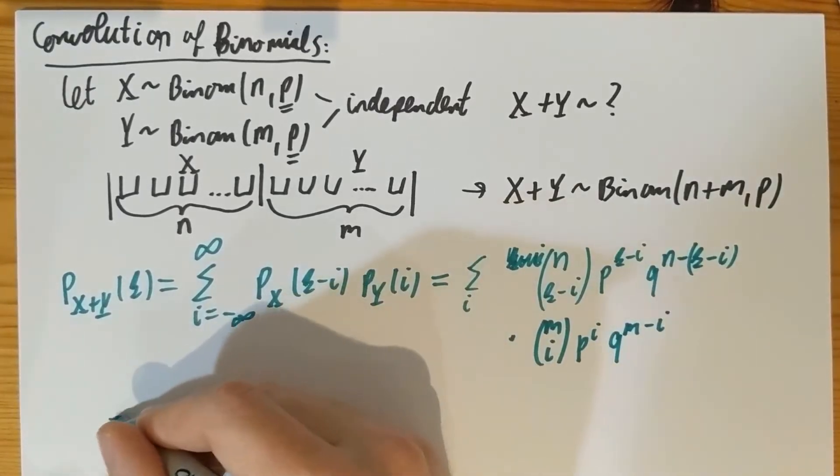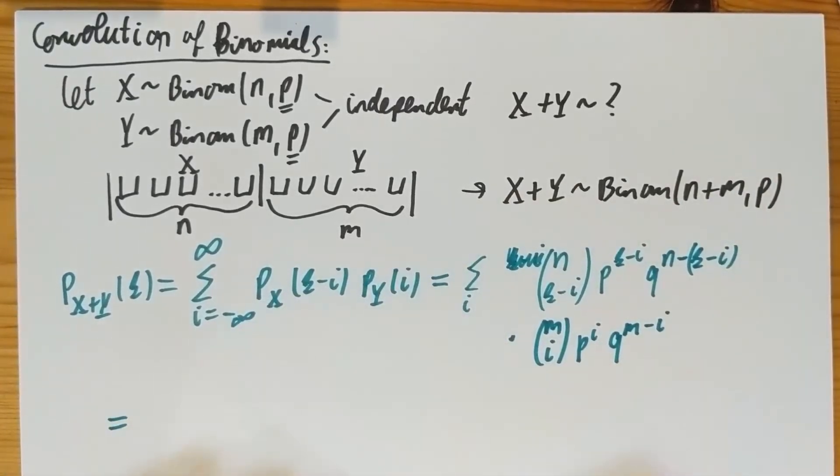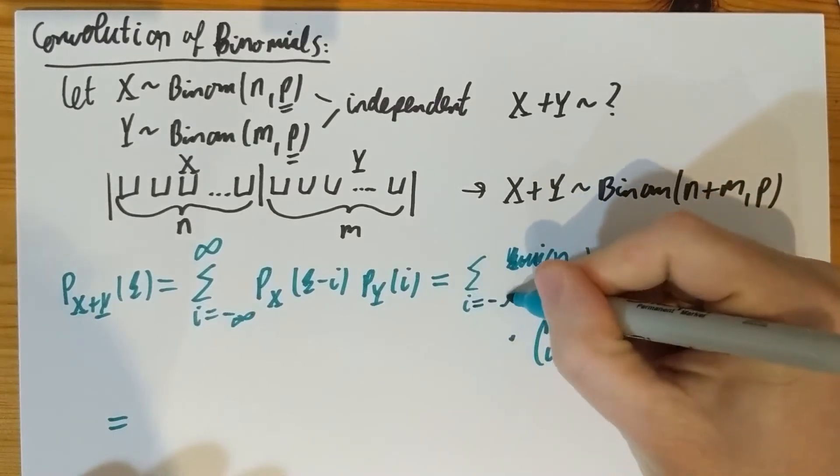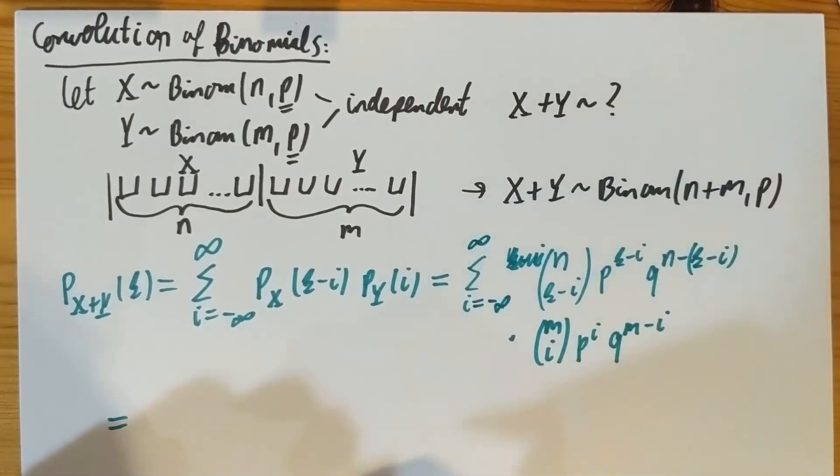And then I have to multiply this by the mass function of Y at I. So that's going to be M choose I and then P to the I and Q to the M minus I. So let's see if I can do this summation here and get what we expect, the binomial mass function at K of parameter N plus M for X plus Y. Now before I do that, let's just look at this I here.